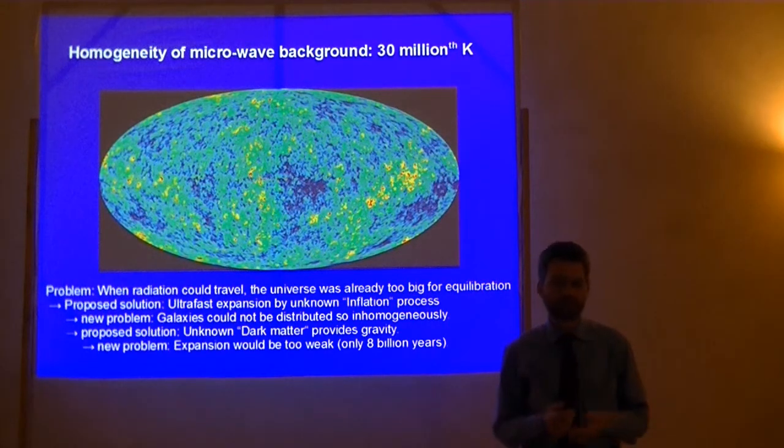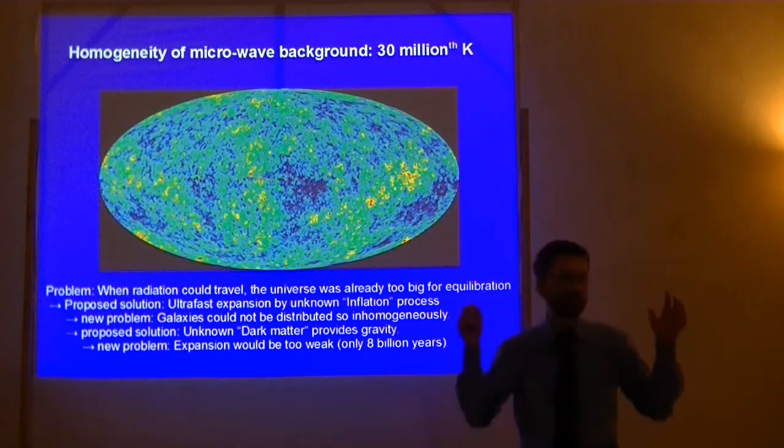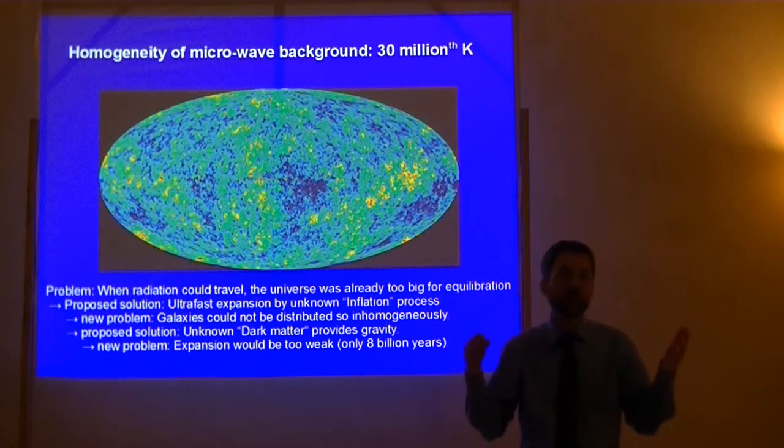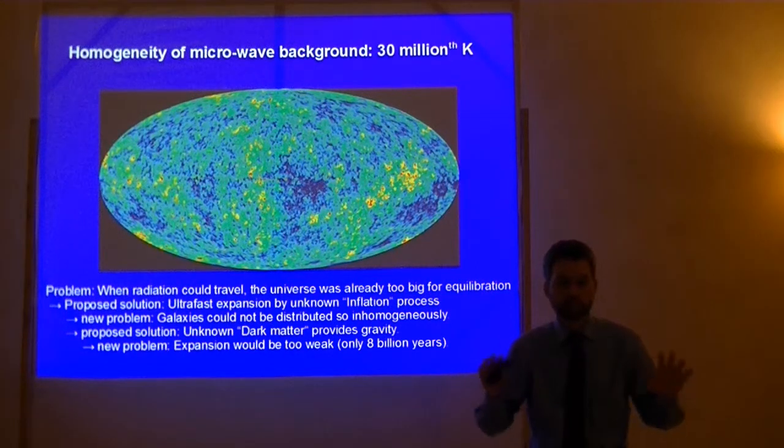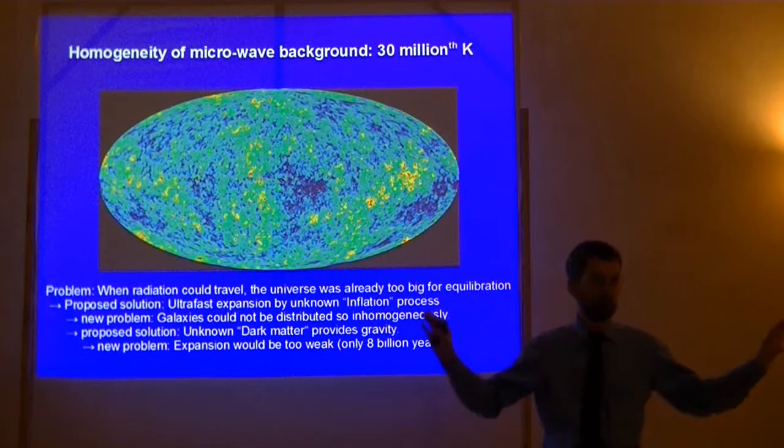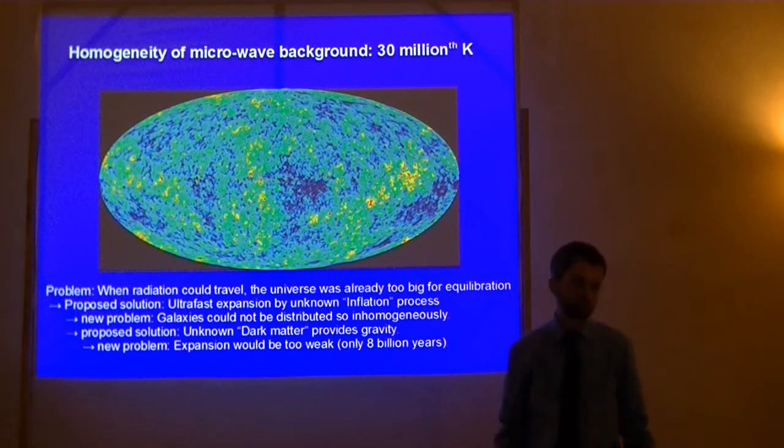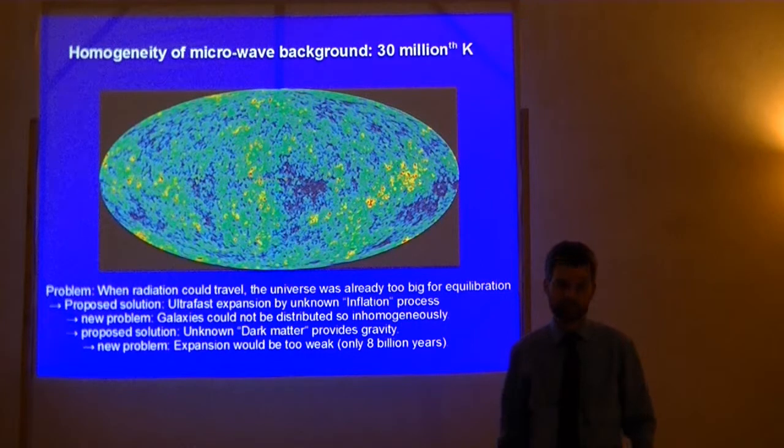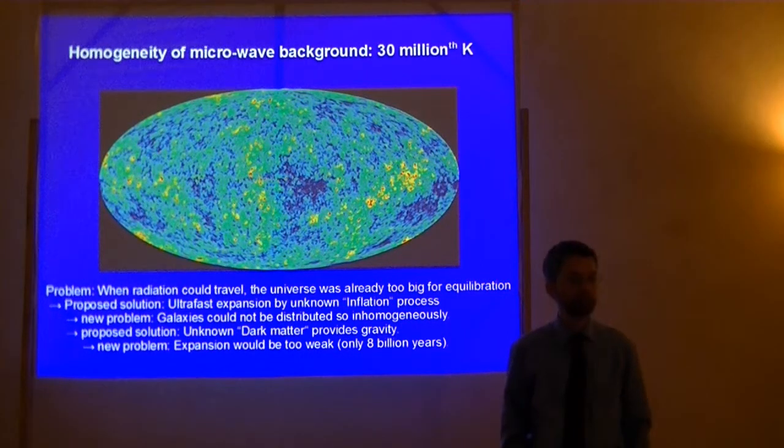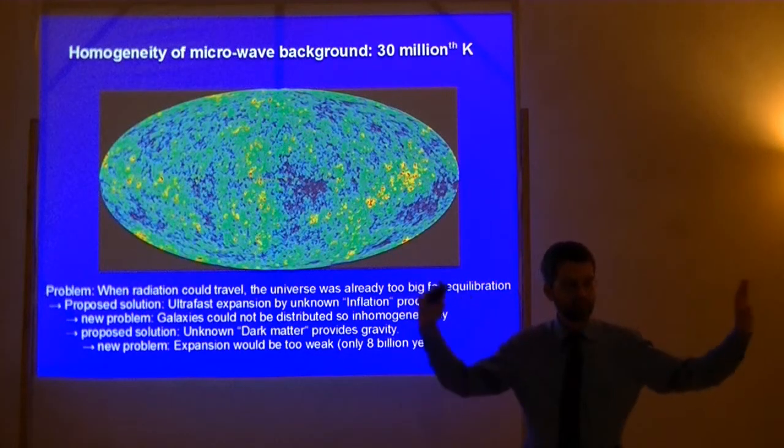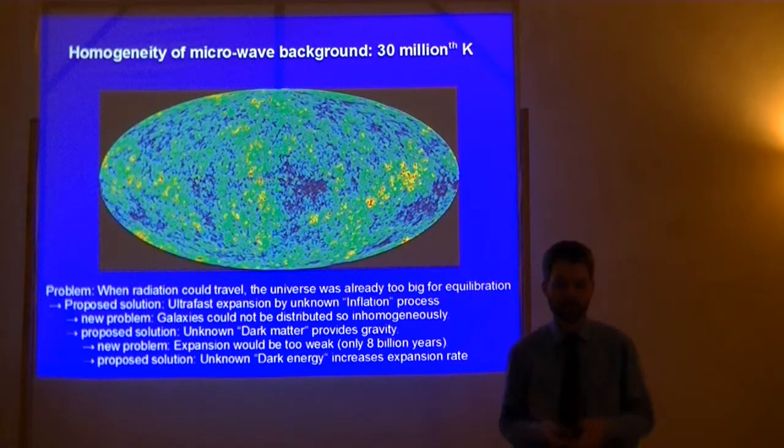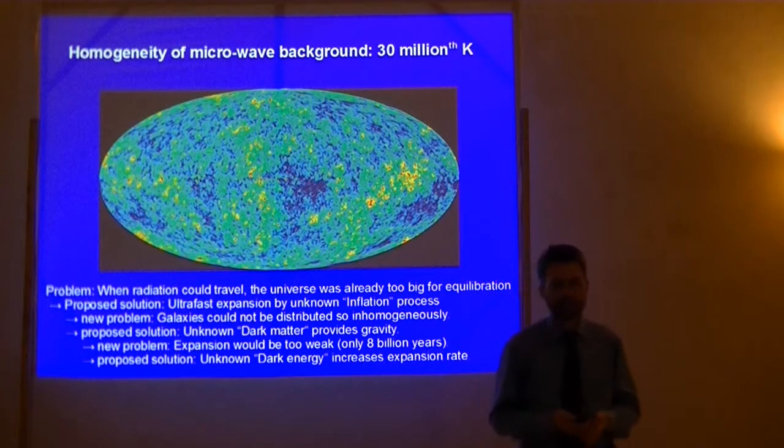Because this would provide the gravity to arrange the galaxies in the clusters and super clusters as we see them. But there is a new problem. If there is so much dark matter introduced, then the calculations showed the expansion of the universe would be too weak. And the age could only be 8 billion years, not 13.7 billion years as the redshift data suggests. How can we solve this problem? We need something which accelerates the movement. We need dark energy.